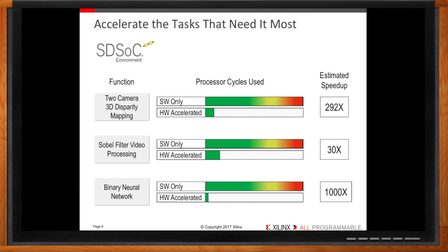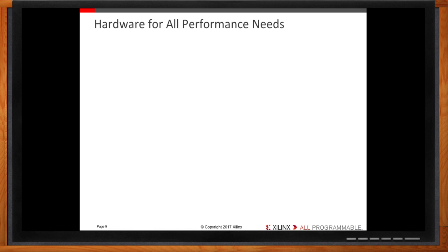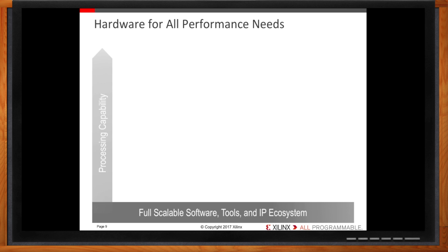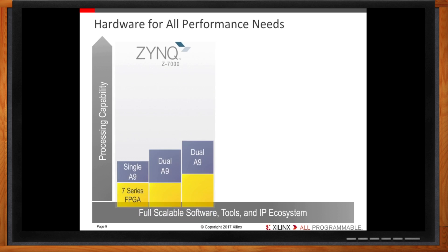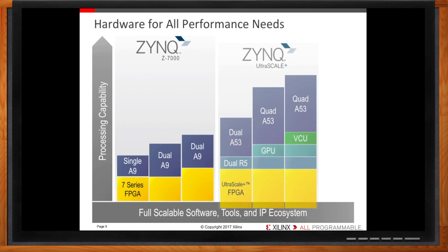What devices are supported by SDSoC? SDSoC supports all Xilinx SoC devices. Xilinx built a full SoC portfolio with a wide range of processing capability on top of a unified, scalable ecosystem. The Zynq 7000 SoCs come equipped with either single or dual Cortex-A9 processors, combined with 7-series programmable logic, allowing you to accelerate compute-intensive tasks and providing processing performance and flexibility for cost-optimized and mid-range applications. For more processing performance, look no further than the Zynq UltraScale+ MPSoC, equipped with dual or quad-core ARM Cortex-A53s, dual Cortex-R5s, and UltraScale+ programmable logic — this device packs serious processing power.